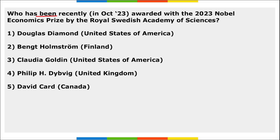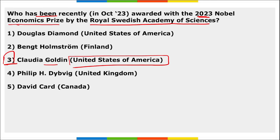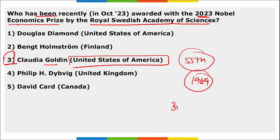Claudia Goldin of the USA has been awarded the 2023 Nobel Economics Prize by the Royal Swedish Academy of Sciences. She is the 55th recipient of the Economic Science Prize since its inception in 1969 and is the third woman to receive this award.